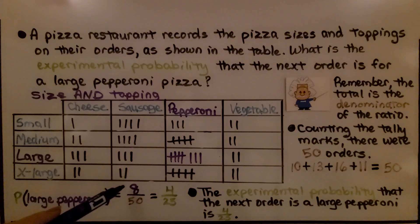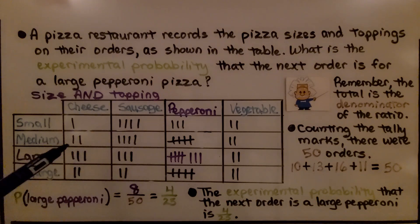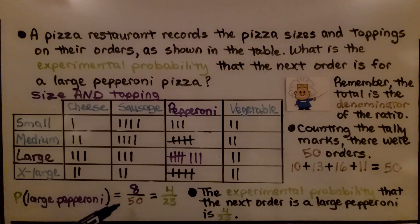That's going to be our numerator. And remember, the total of all of these is the denominator of the ratio. So counting the tally marks, there were 50 orders. We add 10 and 13 and 16 and 11, which is 50. So that's going to be our denominator. We have 8/50.